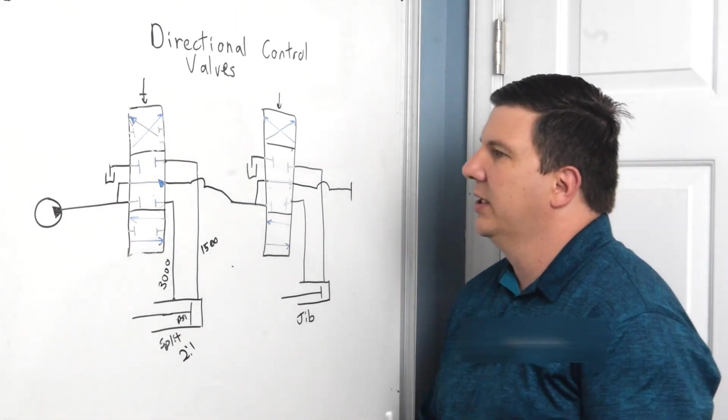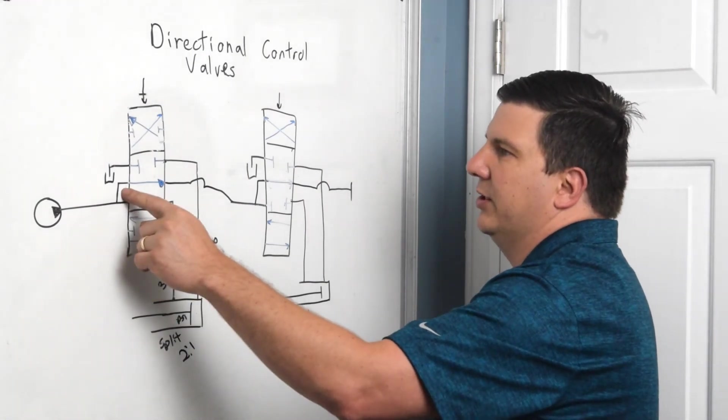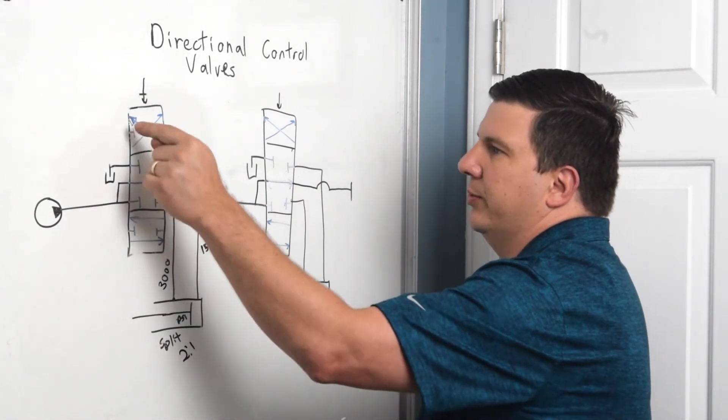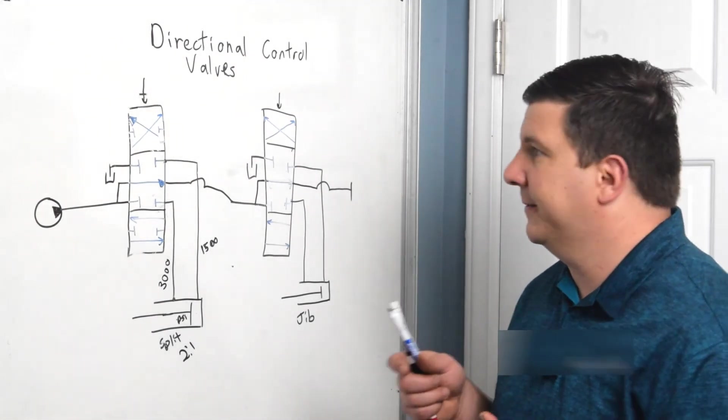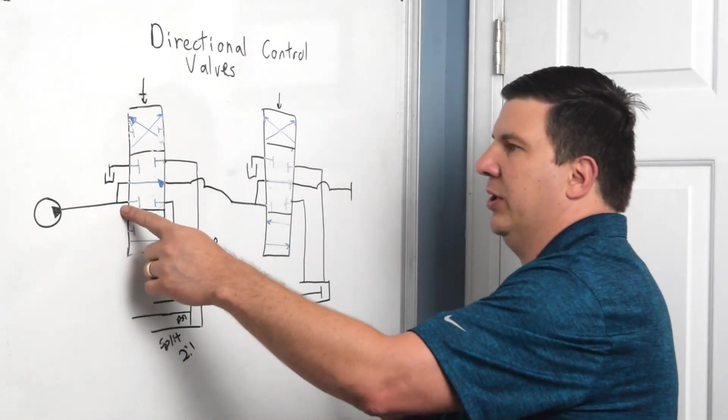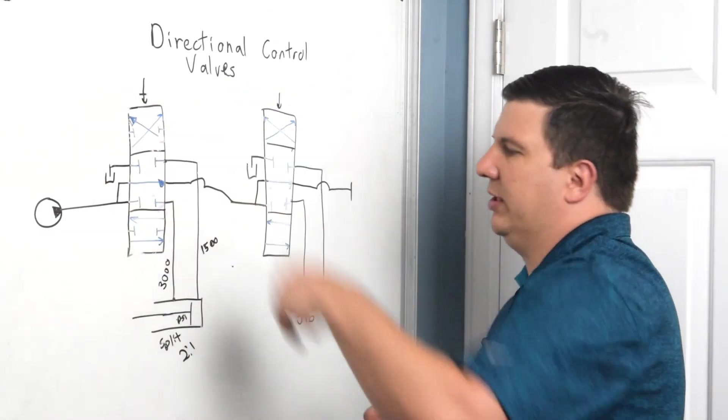But what happens here is as soon as I shift this valve, this flow that goes straight through stops. And it has to come over here to pressure and it'll go out to the cylinder as it needs, depending on whether I shift it this way or shift it that way.